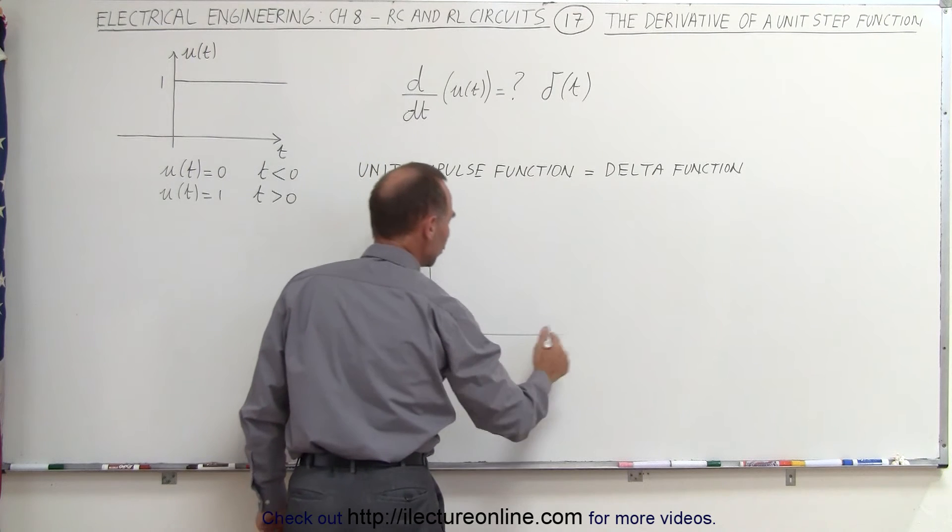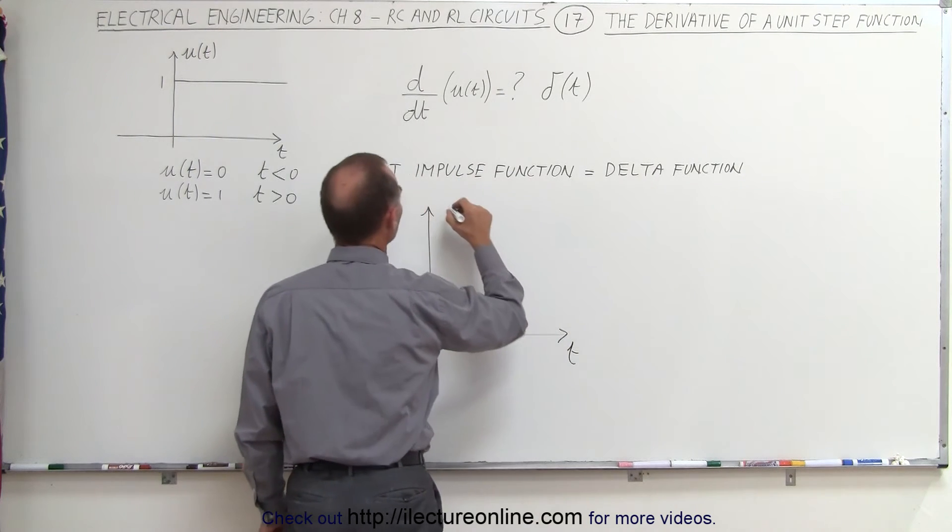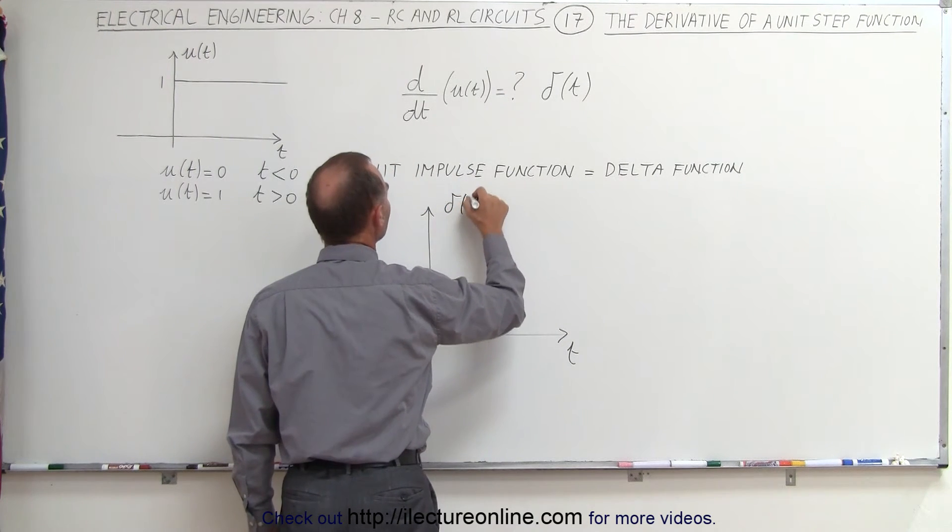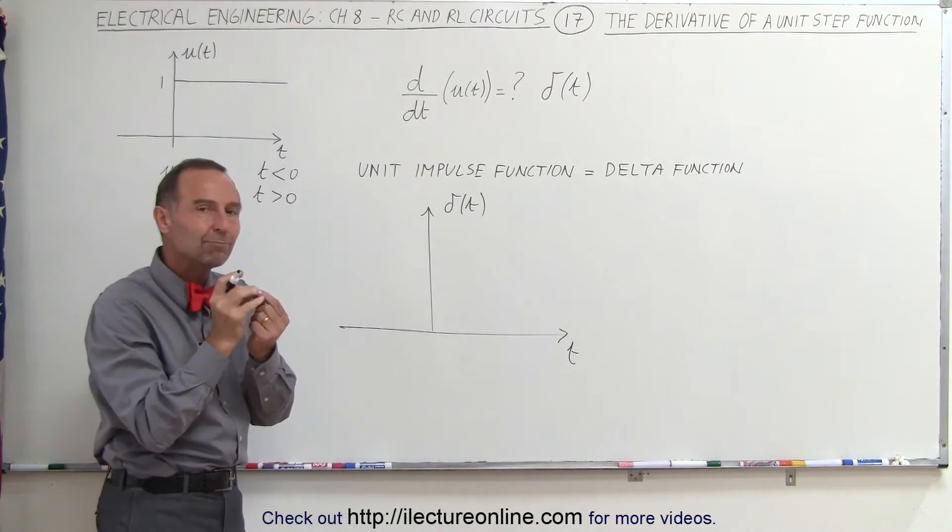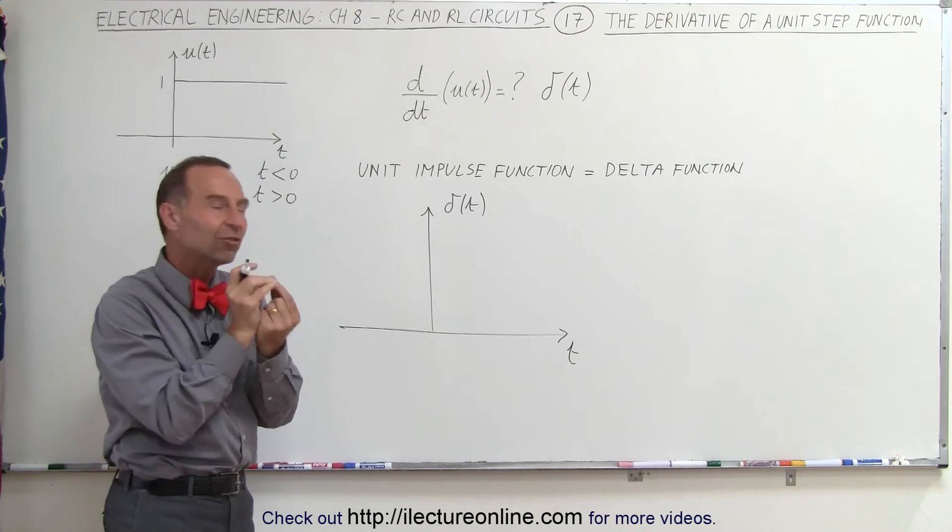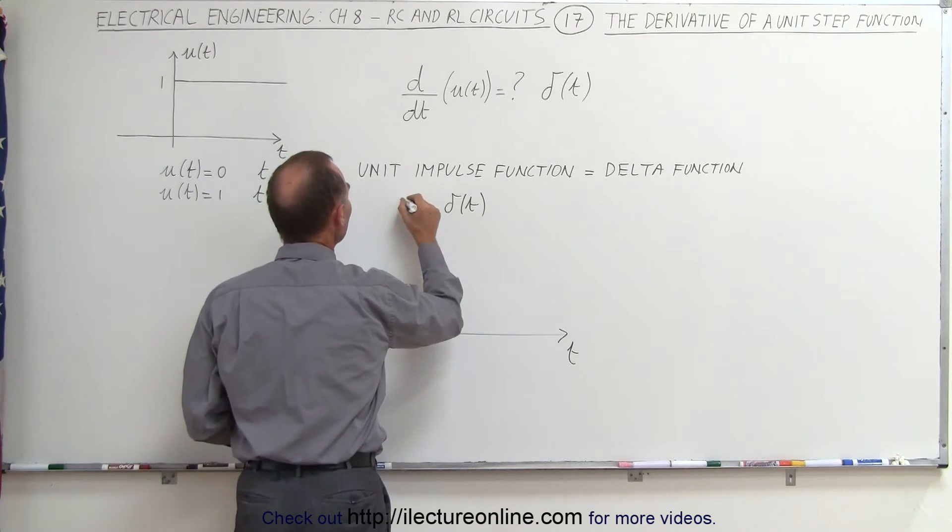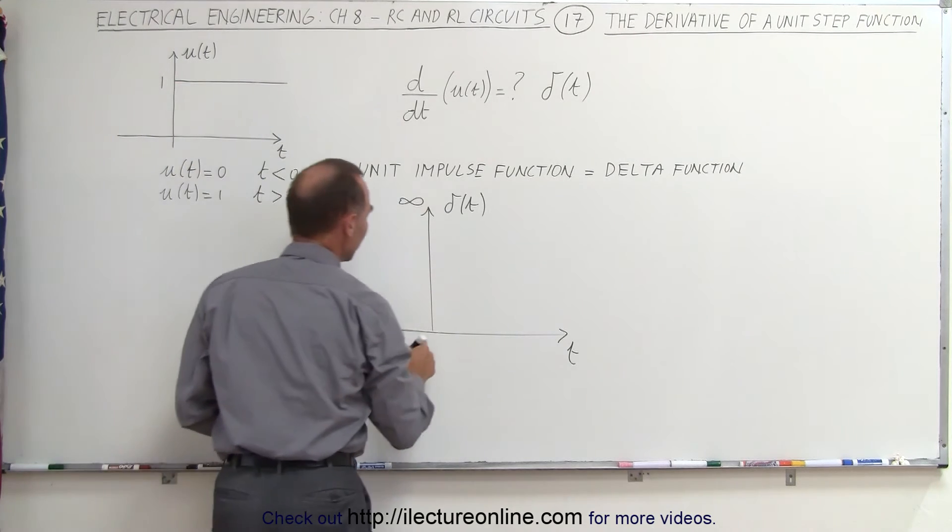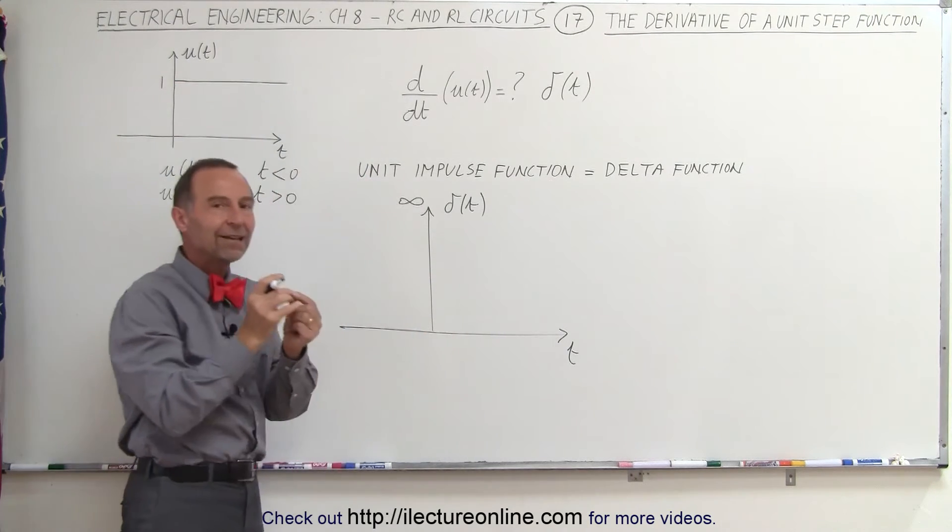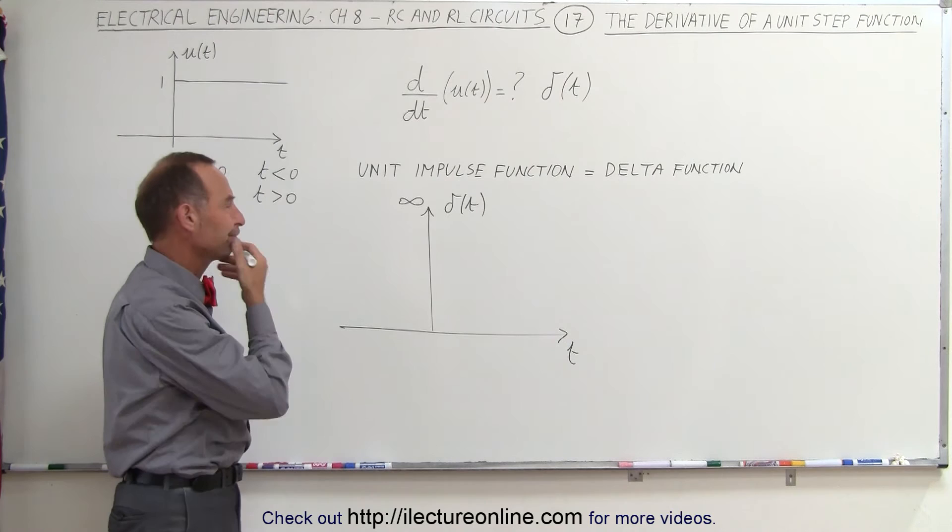on a magnitude versus time graph, and of course this would be the delta function, the delta function right here, what that means is that for a momentary moment in time, which is infinitely small, we get infinity, because at that point the slope is infinity, but it only lasts for a 0 period of time.